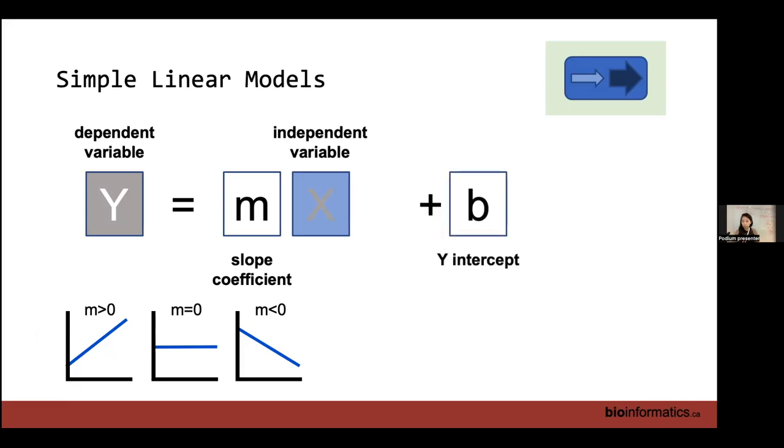The other thing that you can modify is a y-intercept. So y-intercept one is higher than y-intercept two. This is going back to our high school formulas of y equals mx plus b. But the fundamentals we want to walk away with is we can modify the slope and we can modify the y-intercept.